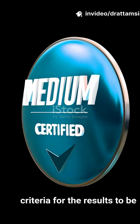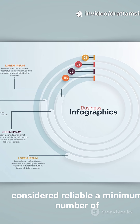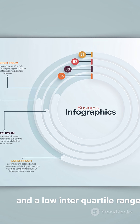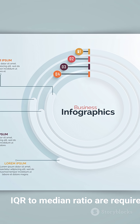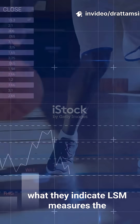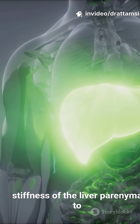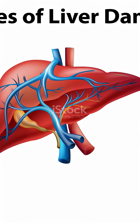Reliability criteria: For the results to be considered reliable, a minimum number of successful measurements, a high success rate, and a low interquartile range (IQR) to median ratio are required. LSM measures the stiffness of the liver parenchyma to assess fibrosis, while CAP measures the degree of sound attenuation to quantify fat in the liver.